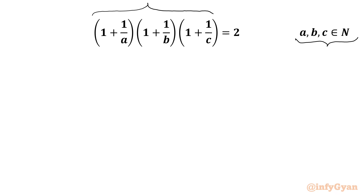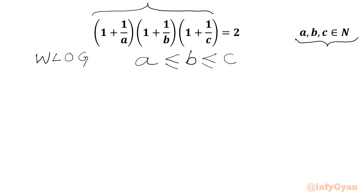We will try to restrict one variable out of these 3 variables. So I will use WLOG — without loss of generality, we can consider A ≤ B ≤ C. Then A is the smallest and C is the biggest, so 1/A ≥ 1/B ≥ 1/C.